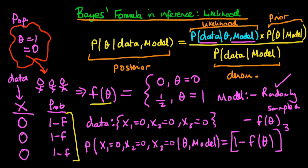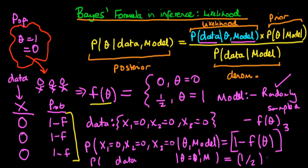We can evaluate this for the two cases. When theta equals zero, F is zero, so it's just 1 times 1 times 1, which equals 1. When theta equals one, F is one half, so it's (1 minus one half) cubed, which is (one half) to the power of 3, which equals one eighth.